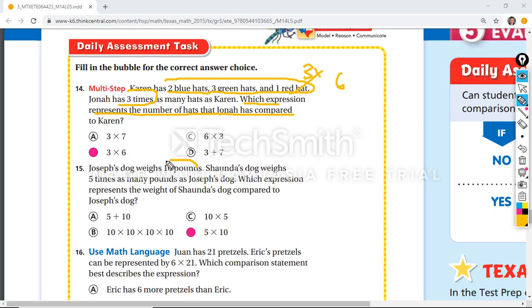Joseph's dog weighs 10 pounds. Shonda's dog weighs five times as many pounds as Joseph's dog, which expression represents the weight of Shonda's dog compared to Joseph's dog. Well, this is it right here. Five times ten.